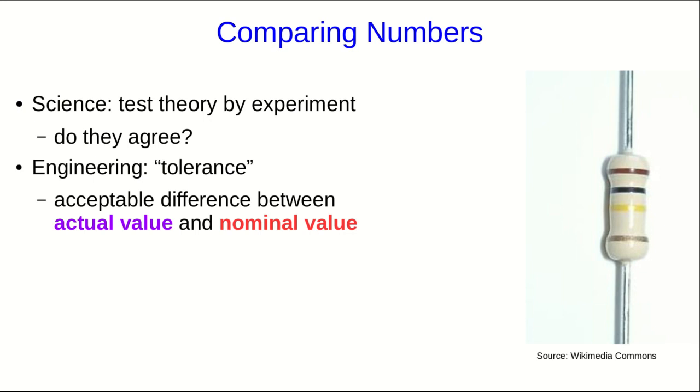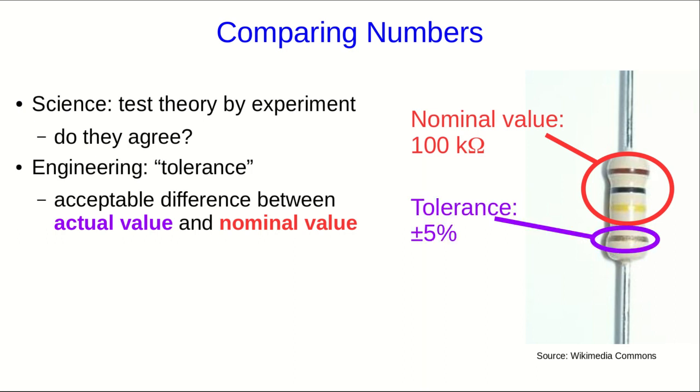For example, this resistor's color code tells us that its resistance has a nominal value of 100 kiloohms. But no production process is perfect, just like no measurement process is perfect. And so if we measure the resistance, we won't expect to come up with exactly 100 kiloohms. This silver stripe tells us that it was produced with a tolerance of plus or minus 5%, and so we would expect that the actual value of the resistance lies in the range 100 plus or minus 5 kiloohms.